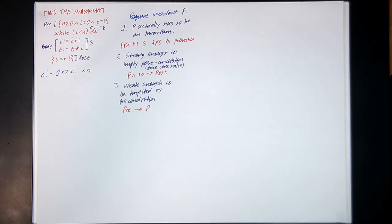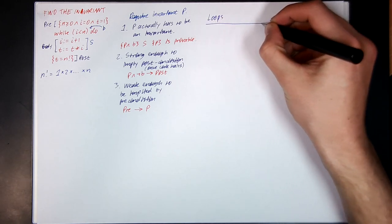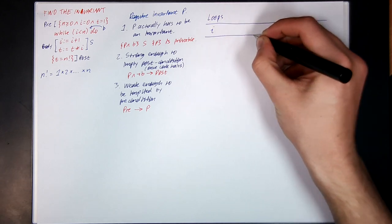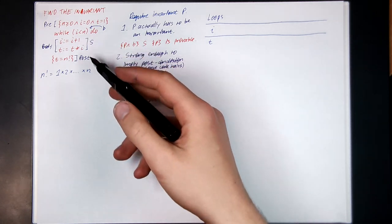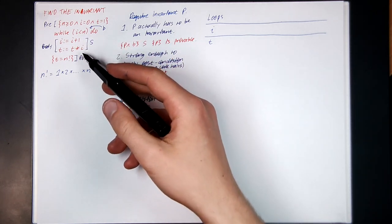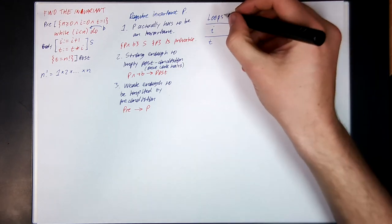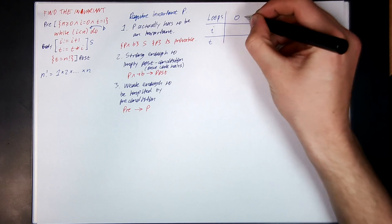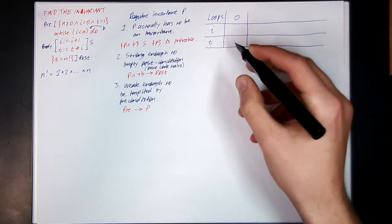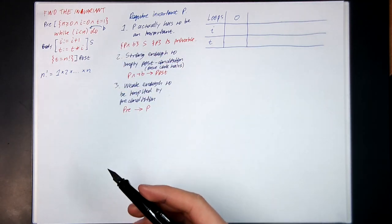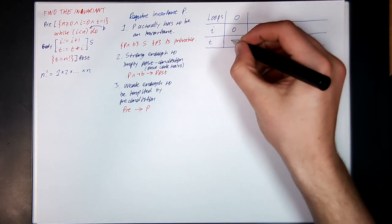Let's see if we can find the invariant. I'll draw a little table here: number of loops so far, the value of i, and the value of t. n doesn't actually change because there's no code that modifies n — n is just a constant, so we can basically ignore n for the moment. After executing zero loops — that is, before we run the code at all — the values of i and t are given in the preconditions: i is equal to 0, and t is equal to 1.